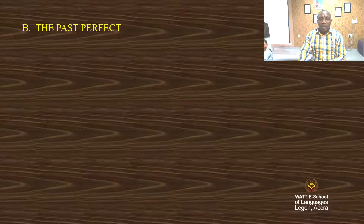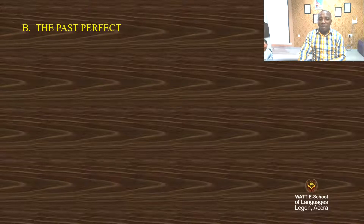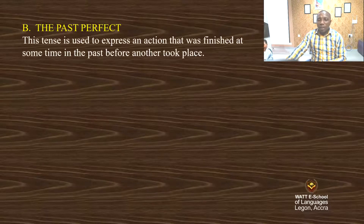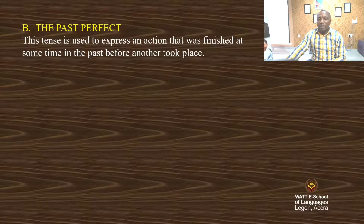We studied the simple and the present perfect. But here, we are going to have a look at the past perfect and how it is formed. The past perfect is used to express an action that was finished at some time in the past before another took place.